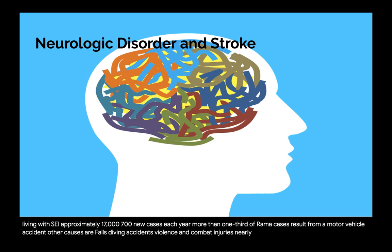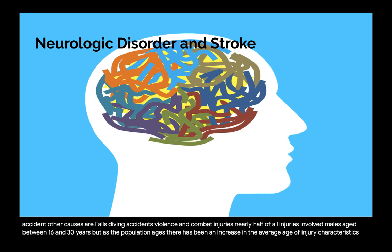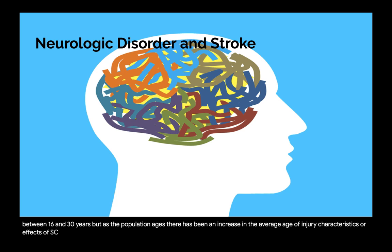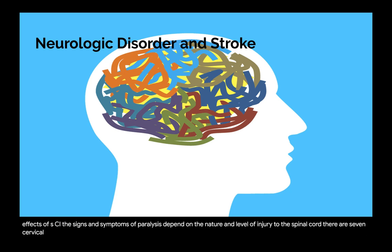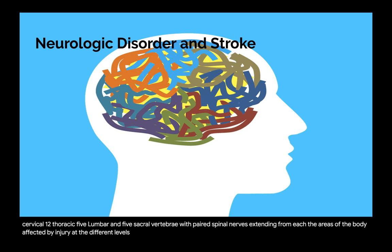Nearly half of all injuries involve males aged between 16 and 30 years, but as the population ages, there has been an increase in the average age of injury. The signs and symptoms of paralysis depend on the nature and level of injury to the spinal cord. There are seven cervical, 12 thoracic, five lumbar, and five sacral vertebrae, with paired spinal nerves extending from each. The areas of the body affected by injury at the different levels are illustrated later in this chapter.